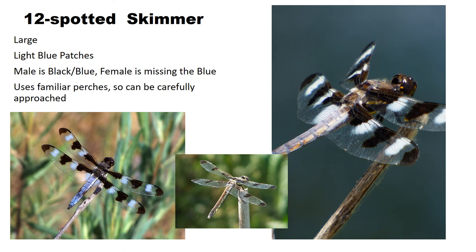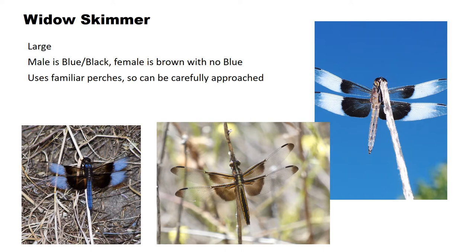Here's another skimmer — I think this is our prettiest dragonfly — called the 12-spotted skimmer. Still a large dragonfly, the male is black with that chalky blue color, and the female is pretty much the same just missing the blue. This is another one that will perch and give you a few chances at a photo. Males are often easier to identify because of their color, but if you wait around you'll likely see a male along with the females.